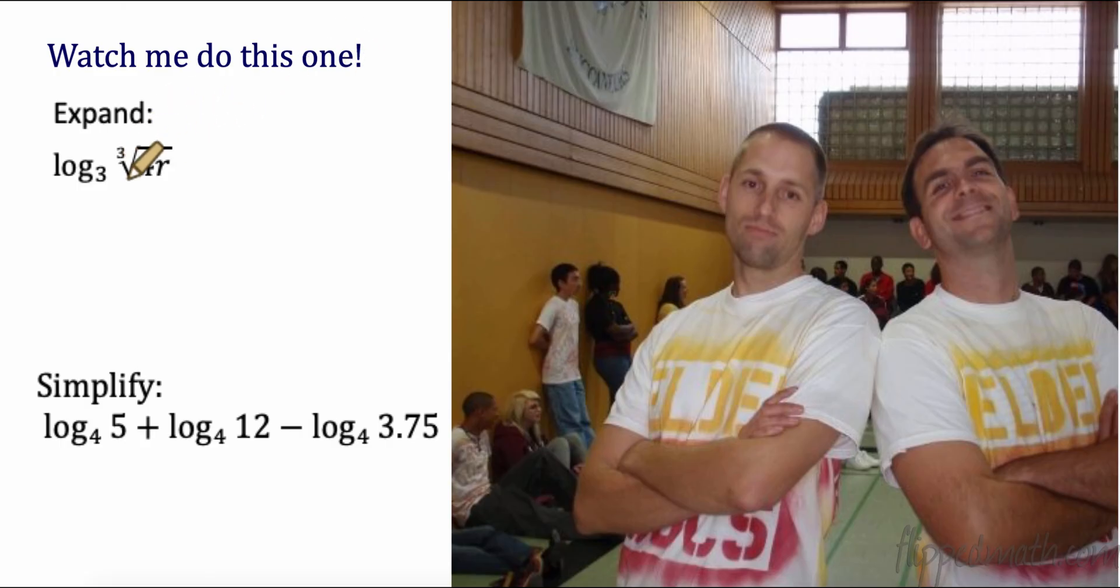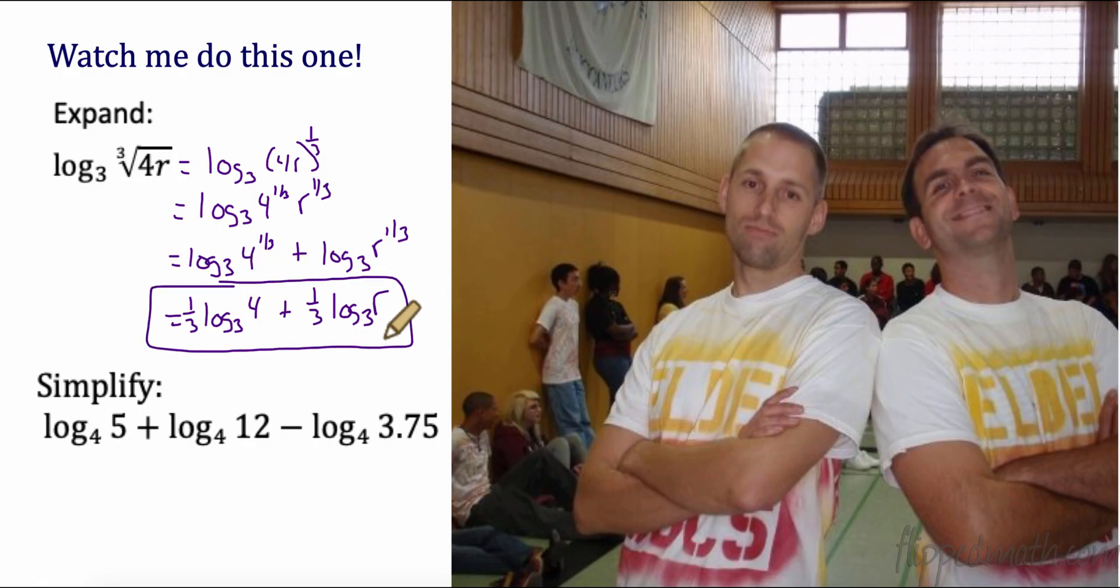Let's do a few more of these. Let's expand this. So the first thing I notice is this is a cube root. So let's make that log base 3 of this whole thing to the 1/3. What else can we do? We can split these. So this is going to be log base 4 of 4 to the 1/3 times r to the 1/3. What's our product property? I can split those into 2 - log base 3 of 4 to the 1/3 plus log base 3 of r to the 1/3. And last but not least, I can do my power property, move that to the front. So this is 1/3 log base 3 of 4 plus 1/3 log base 3 of r. So that is fully expanded.